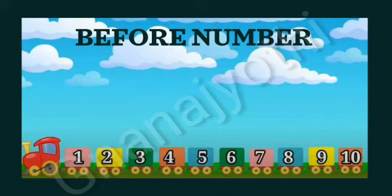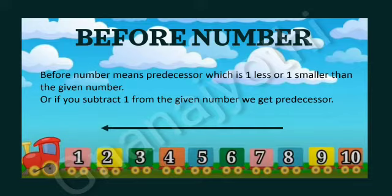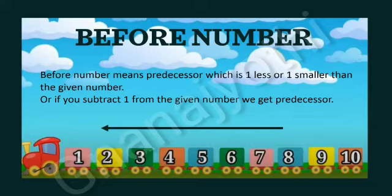Now let us learn about before number. Before number means predecessor — which is 1 less or 1 smaller than the given number. Or, if you subtract 1 from the given number, we get the predecessor. The before number will always be in the backward direction. Before 8 is 7, before 7 is 6, before 6 is 5, before 5 is 4 — just 1 less than the given number.